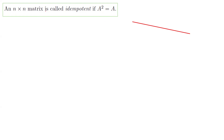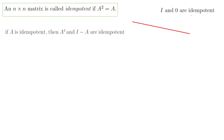An n by n matrix is called idempotent if you multiply the matrix by itself and the result is equal to the matrix itself. The identity matrix I and the zero matrix are both idempotent. The question asks: if A is idempotent, then the transpose of A and I minus A are also idempotent.